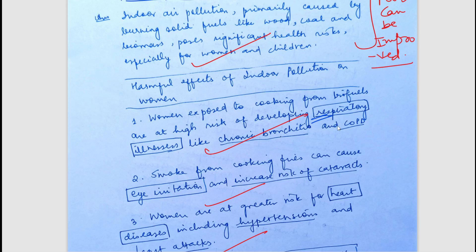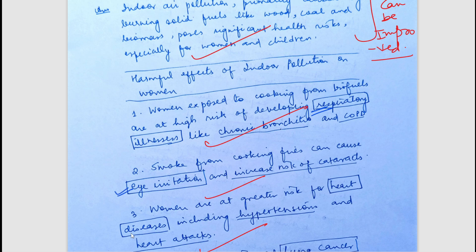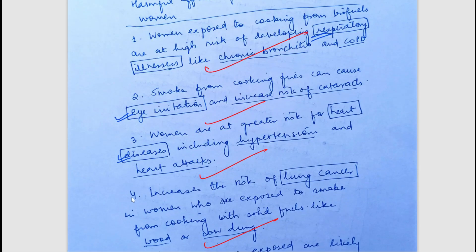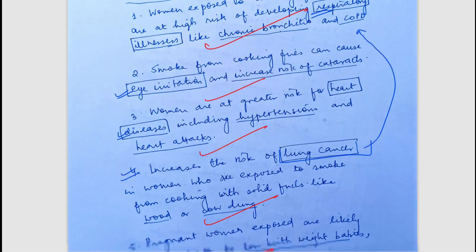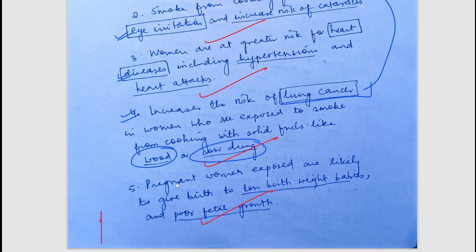For women, there can be respiratory illness such as chronic bronchitis, eye problems, heart diseases such as hypertension and heart attacks, and lung-related diseases including lung cancer, which can fall under respiratory illness since the lungs are involved in respiration. Cooking fuels like wood and cow dung create a lot of smoke. Pregnant women can also face problems such as low birth weight babies and restricted fetal growth.